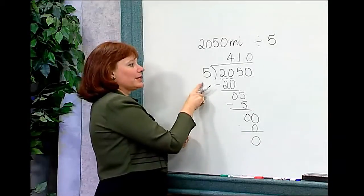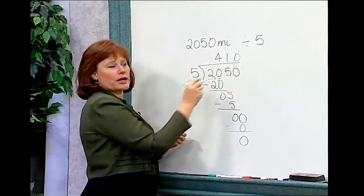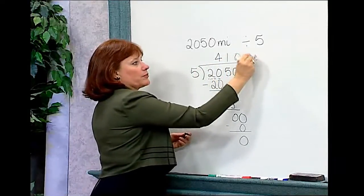Now what does this mean? It means if they went 2,050 miles in five days, they must have averaged 410 miles per day.